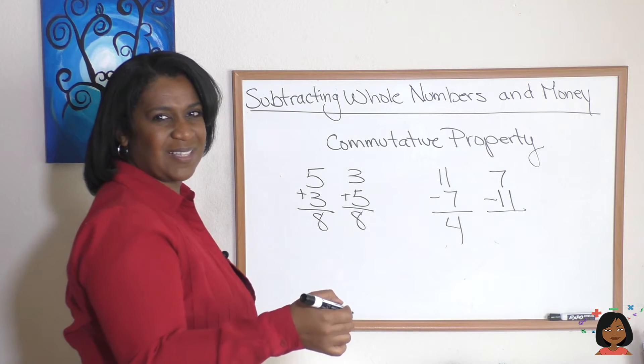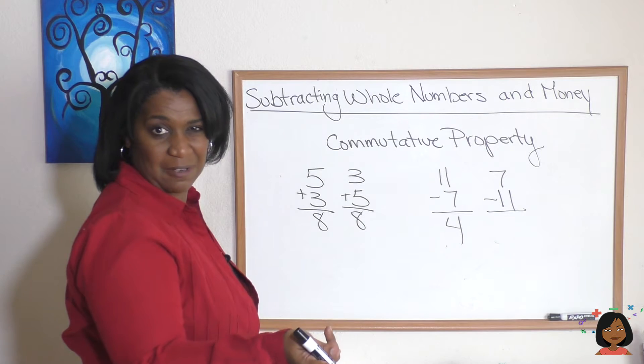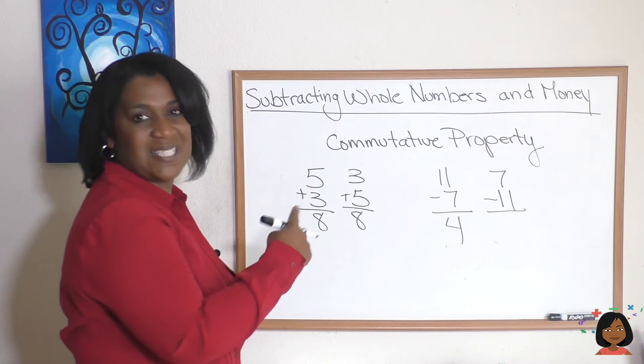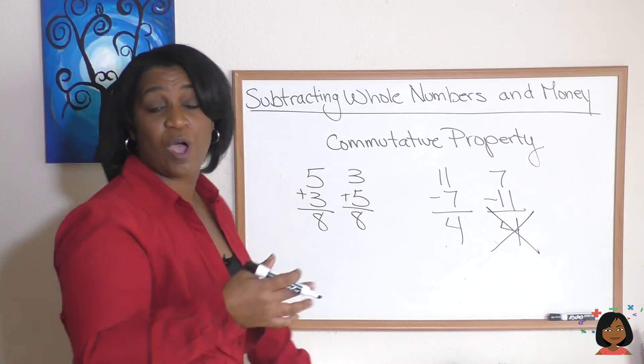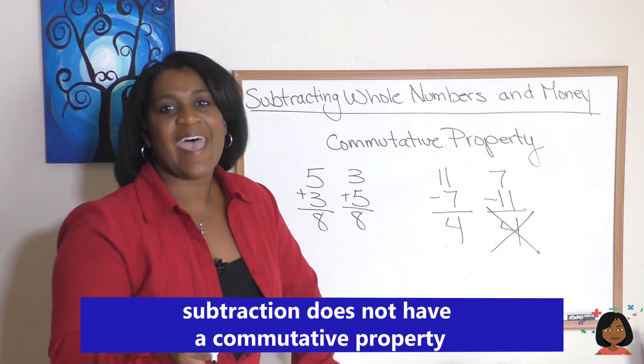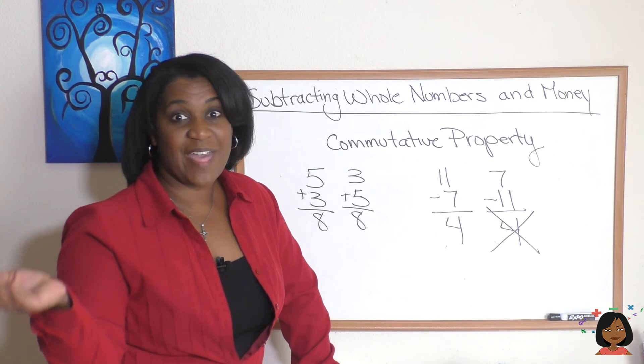So seven minus eleven does not give us four. That's not correct. So what does that mean? It means that subtraction does not have a commutative property like addition does. And that's it, that's your quick review on subtracting whole numbers and money.